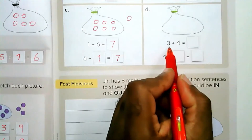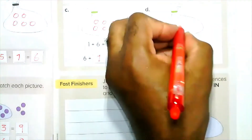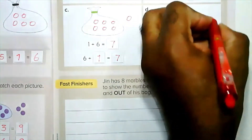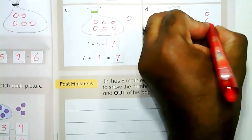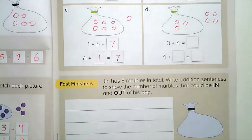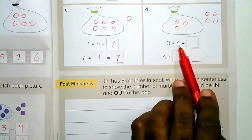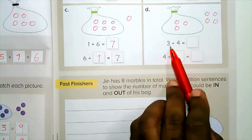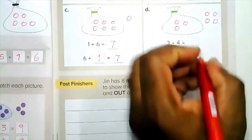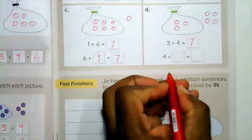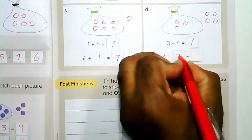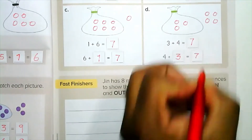Part D: we have three and four. Draw three circles inside and four outside — one, two, three, four. Use the bigger number and count on with the smaller number: four, five, six, seven. Four plus three equals seven.